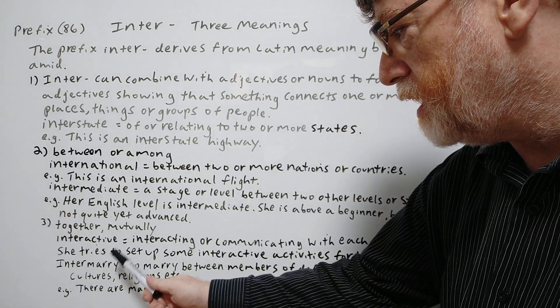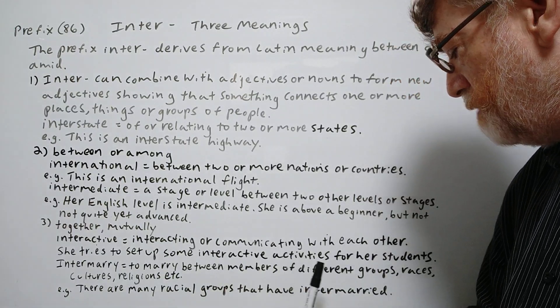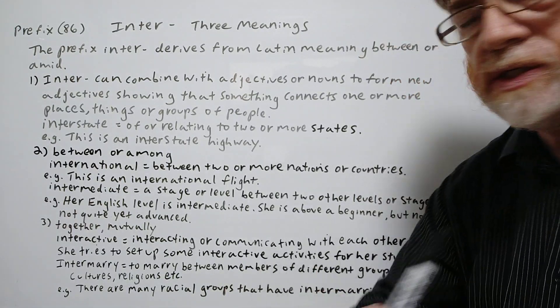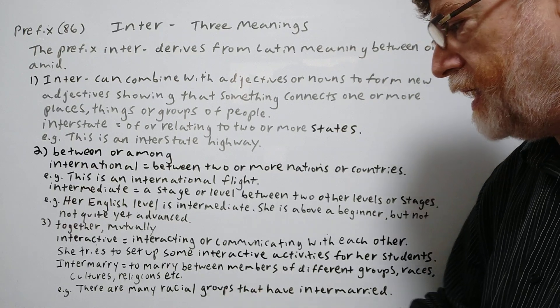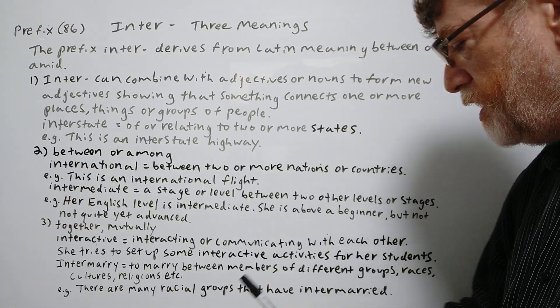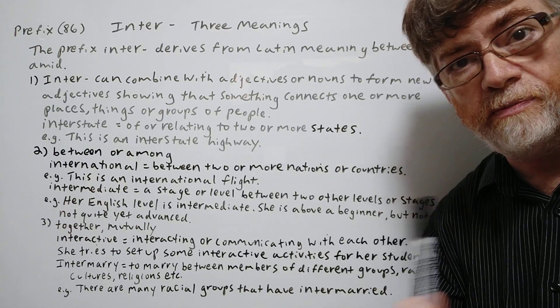And our last one here, intermarry. To marry between two members of different groups, races, cultures, religions, etc. There are many racial groups that have intermarried.